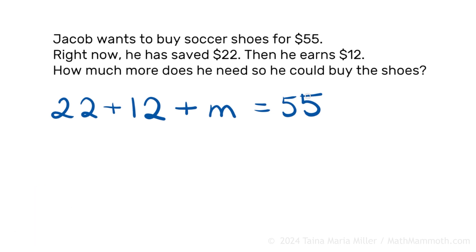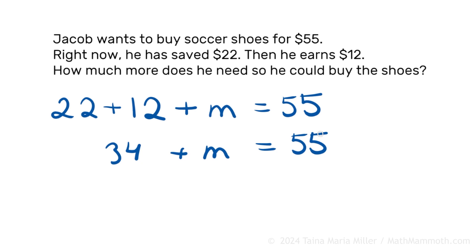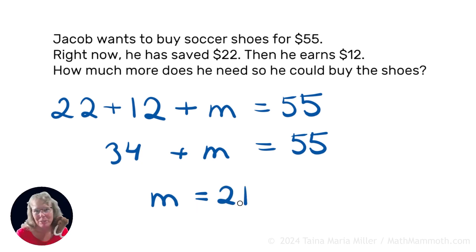To solve this, I will first add the $22 and $12, which was $34. So it's actually $34 plus some more M equals $55. Now I can use mental math again: $30 and $50, so that means $20, and then $4 and $5 — $21 works. So M equals $21. He needs $21 more so he could buy the shoes.